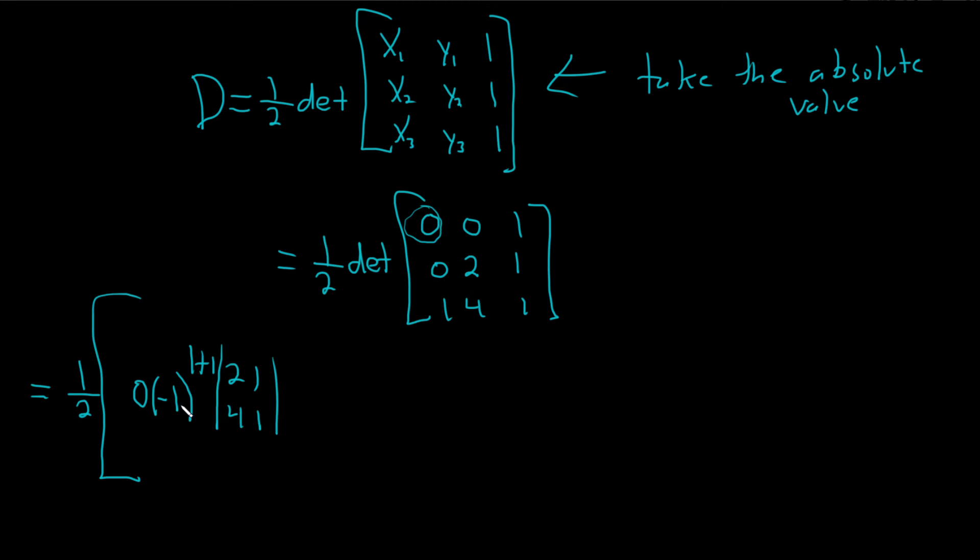So this number here, always a negative 1 to the row plus column, so 1 plus 1. And if you cross it out, you see what's left, 2, 1, 4, 1, 2, 1, 4, 1.